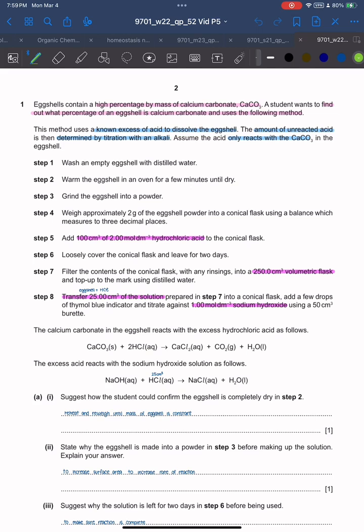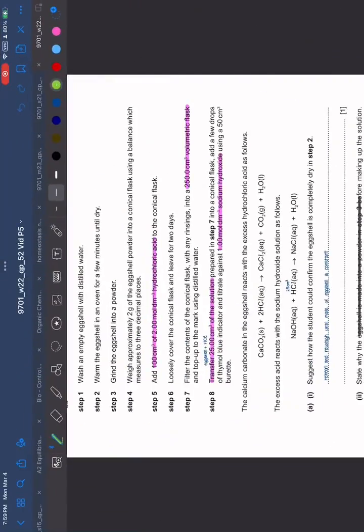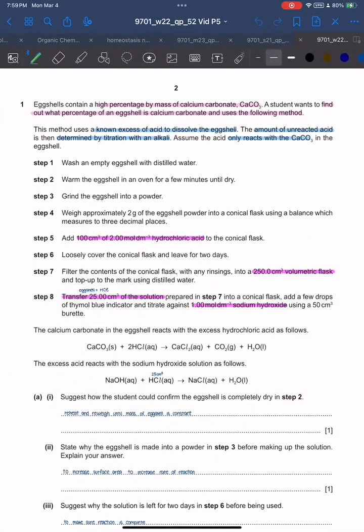This method uses a known excess of acid to dissolve the eggshell. The amount of unreacted acid is then determined by titration with alkali. Assume the acid only reacts with CaCO3 in the eggshell.